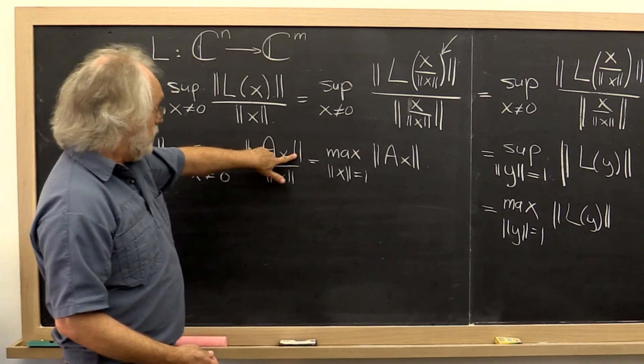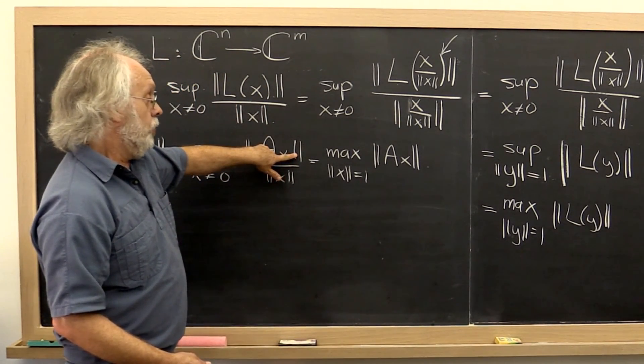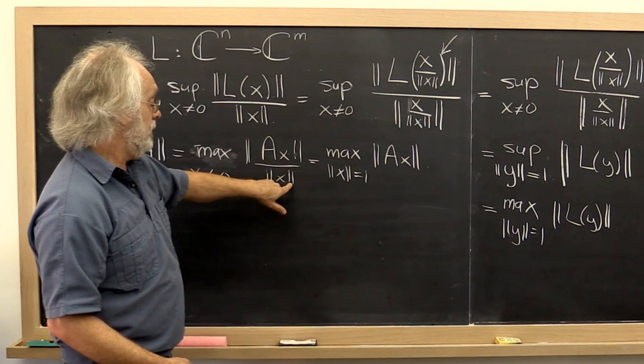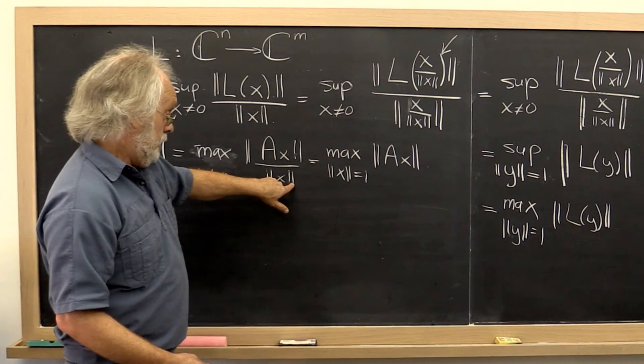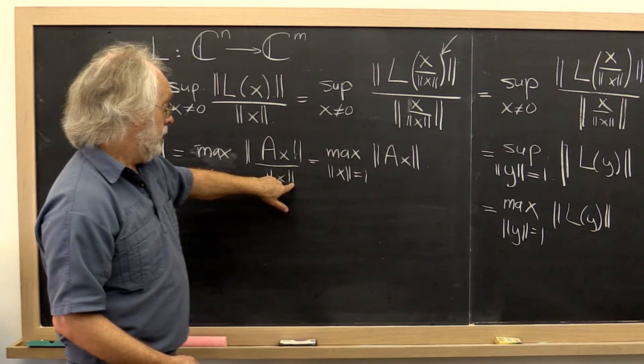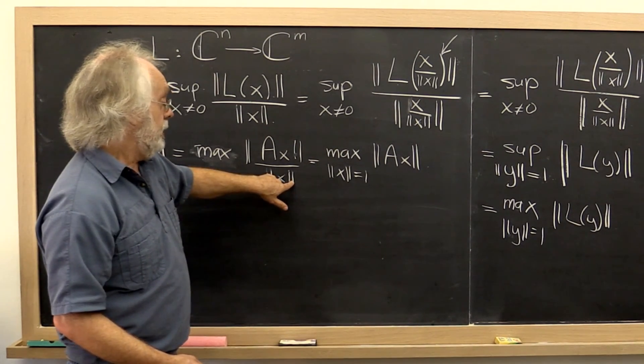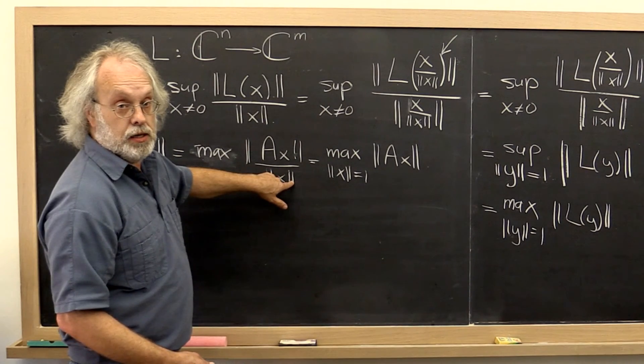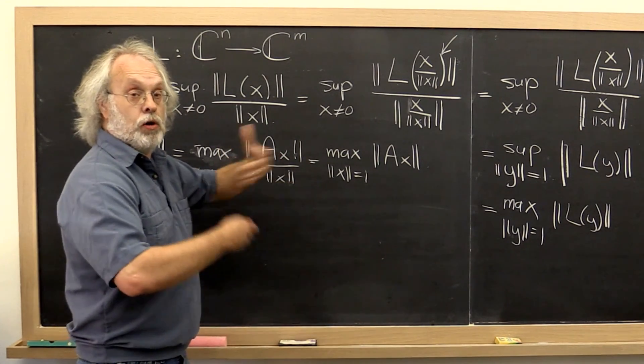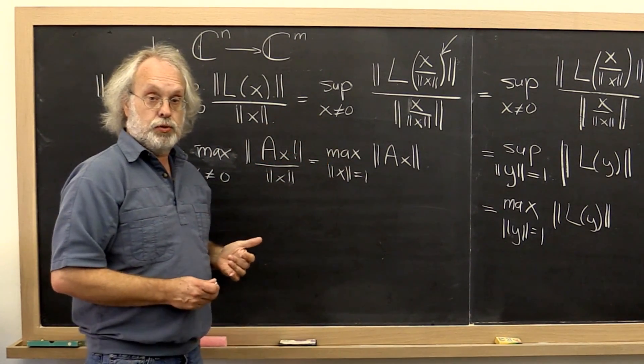And what we now actually have is an entire family of norms. They're called induced norms. Because what you pick for the norm for the result of a times x can be a different norm for what you pick for the vector. That's the input vector. And therefore, we now have a lot of choices.